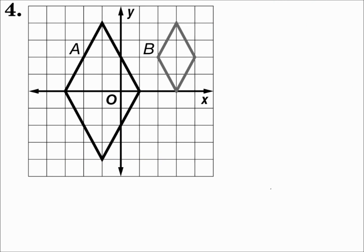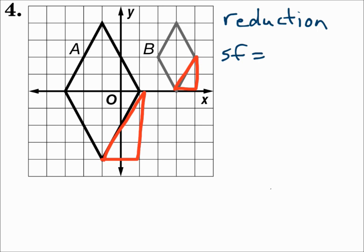Number 4: from A to B it got smaller, so it's a reduction. For the scale factor, we'll do new length over old length. We don't have any horizontals or verticals here, so we'll have to use a diagonal. When you use diagonals, you have choices: you could use the distance formula, or you could do the Pythagorean theorem by creating right triangles. To find the length on B, I can make a right triangle, and to find the corresponding length on A, I can make that right triangle too. Each side is a hypotenuse, so we use the Pythagorean theorem to find each hypotenuse and then find the scale factor.